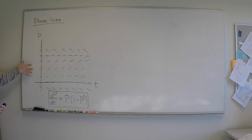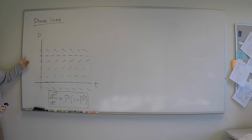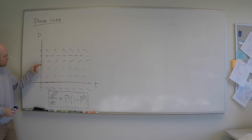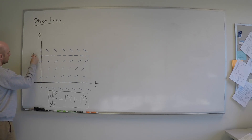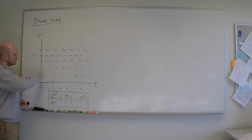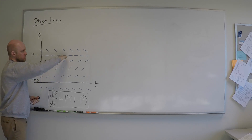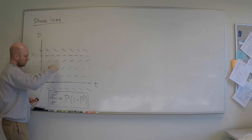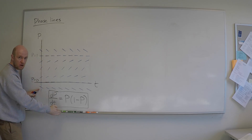I've drawn the slope field. Let's take a quick look and observe some features of it. One feature is that there's an equilibrium at p equals 0, and there's also an equilibrium at p equals 1. In between 0 and 1, the solution will be growing up to 1. Above 1, it'll be shrinking down to 1. Below 0, it shrinks down to minus infinity.